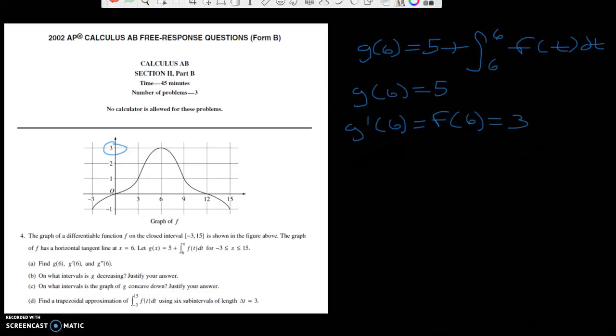Now I want you to find g double prime of 6. G double prime of 6 is going to equal f prime of 6. So now we have to look at this graph and look at the slope over here. What is the slope over here? It's 0.